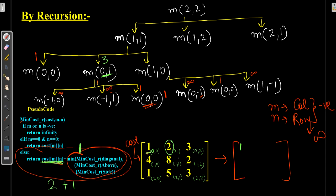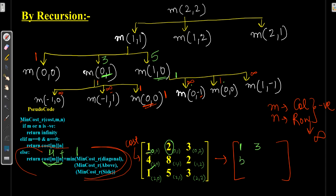So (0,1) will be 3. Now calculating M(1,0): we already have infinity, 1, and infinity. Minimum of these is 1. Cost of (1,0) in the input is 4. So 4 + 1 = 5, giving M(1,0) = 5.